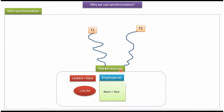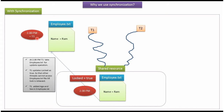Here you can see the shared resource employee.txt. It contains name equal to rom at 2 pm and locked equal to false. Here you can see thread1 and thread2. These two threads are trying to access and update the shared resource employee.txt. At 2 pm, thread1 takes the employee.txt file for update operation. Immediately thread1 updates locked equal to true. Once the lock is true, other threads cannot access employee.txt till the lock is released.